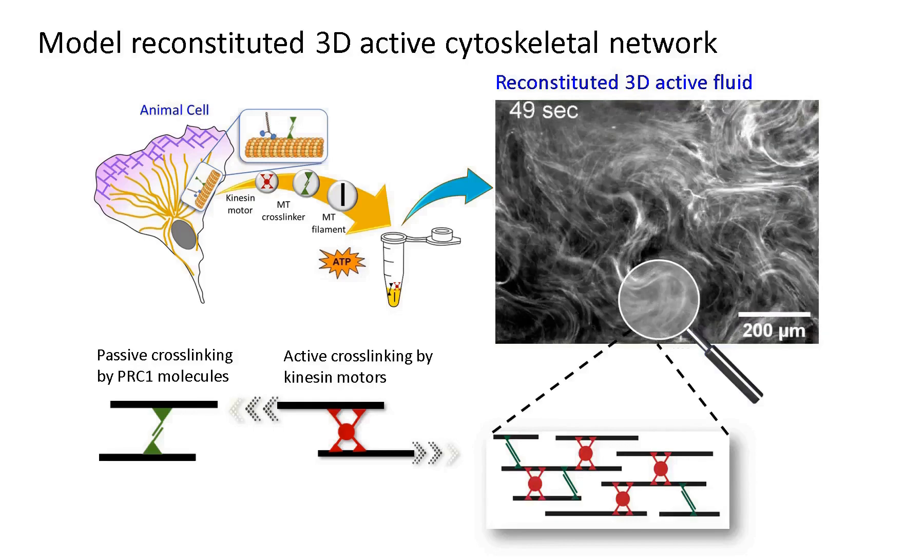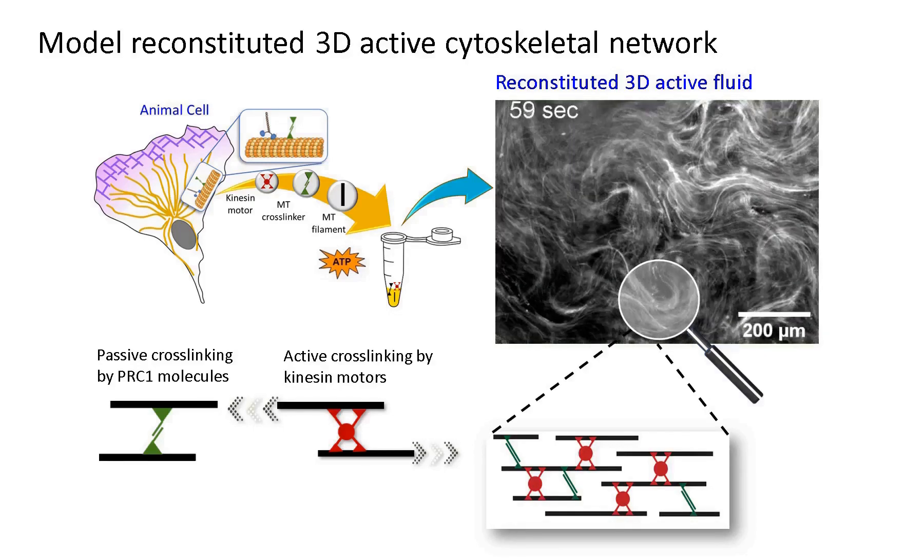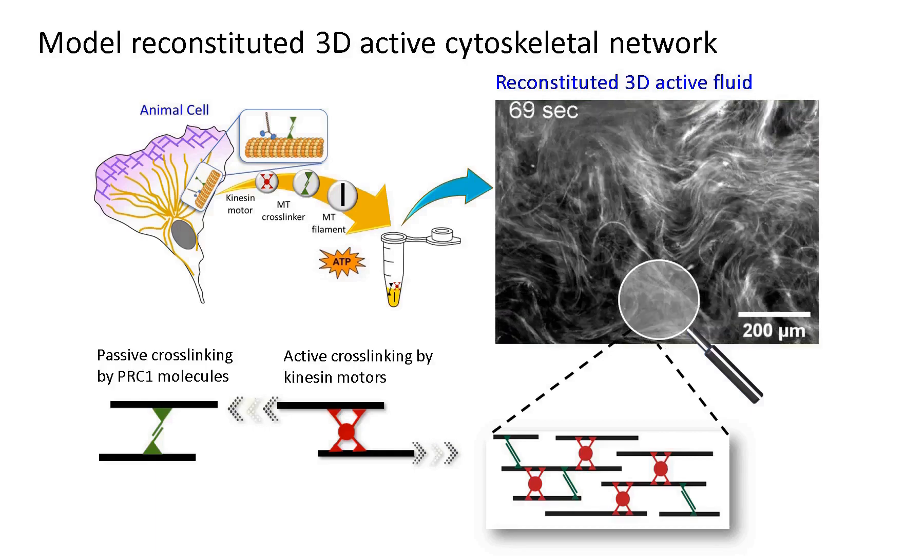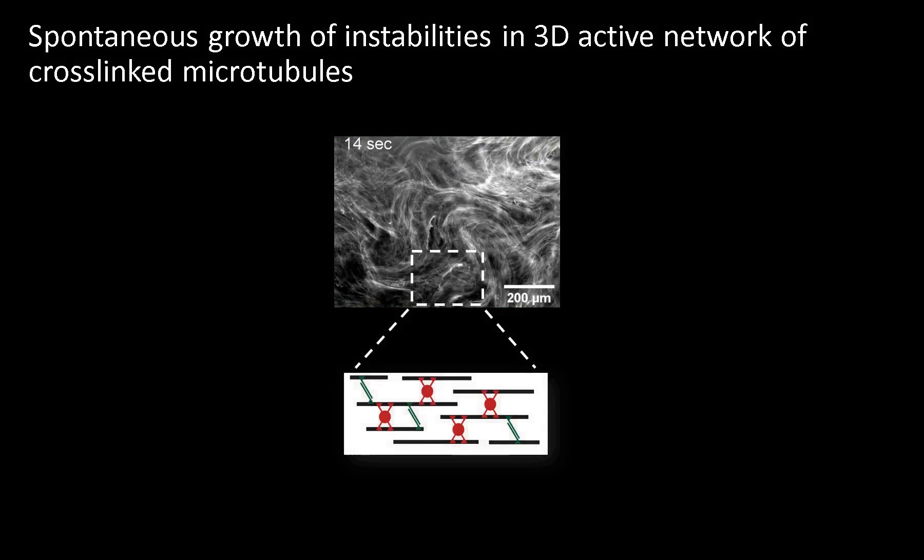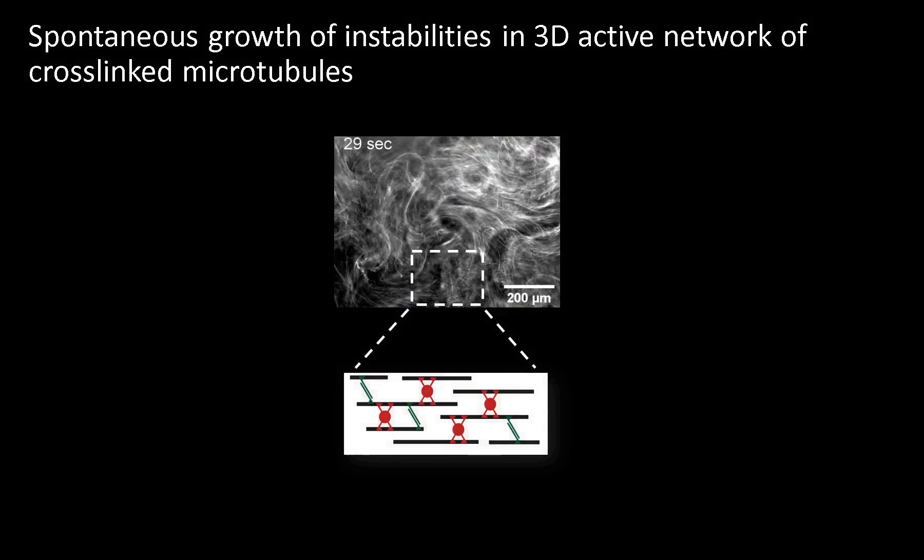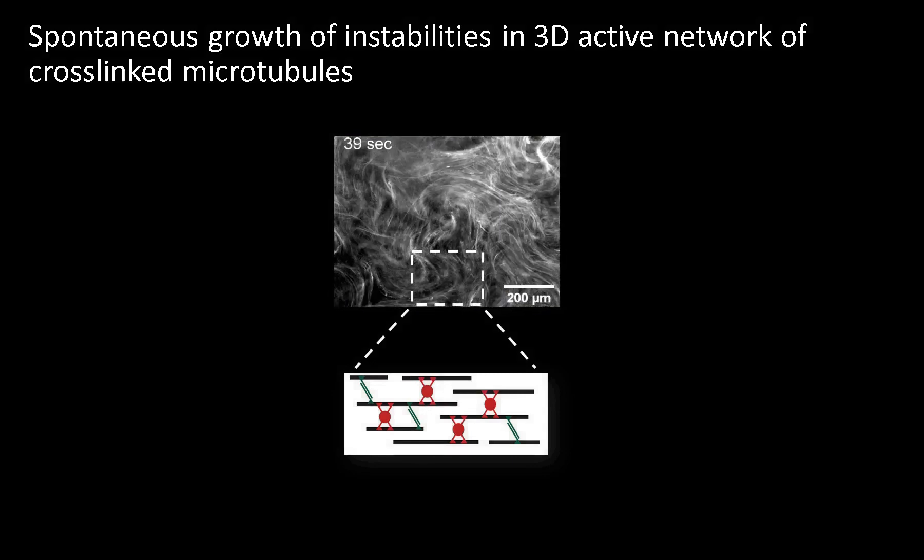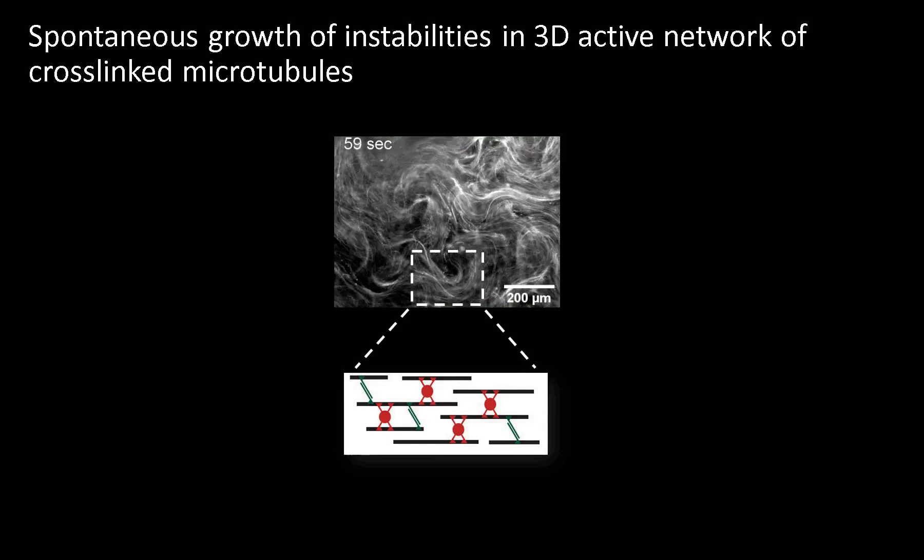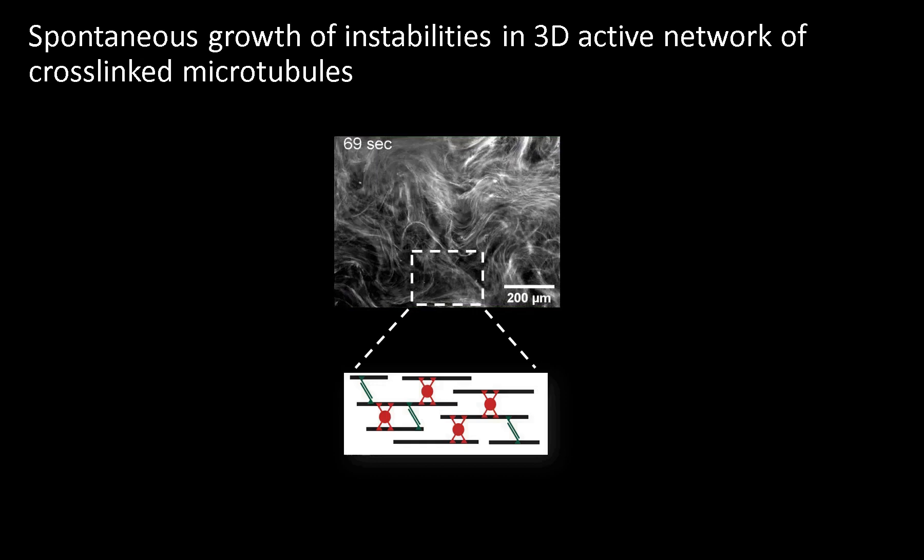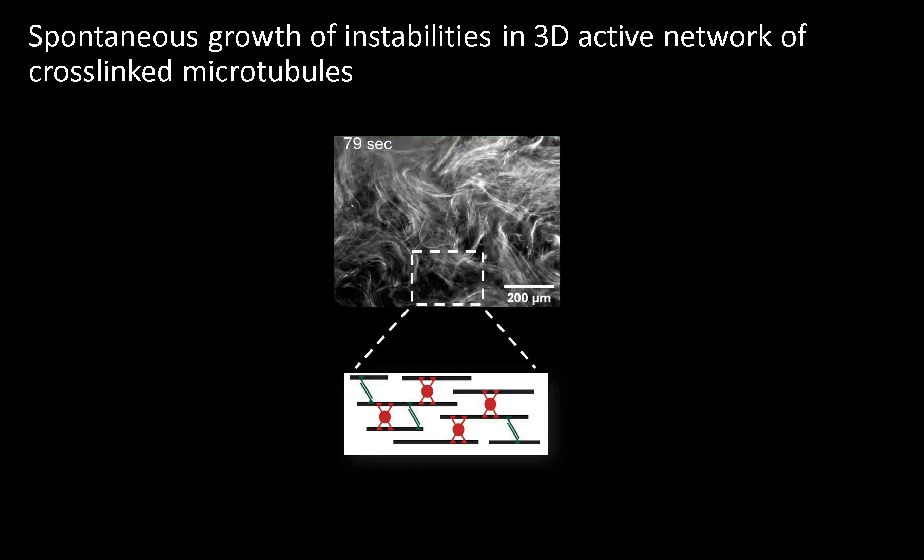Connecting the forces generated at the microscopic scale to the emergent dynamics at larger length scales is a key challenge. Investigating spontaneous deformations in a minimal in vitro system composed of cytoskeletal proteins can reveal how to rationally design and control biomimetic materials. We show that depending on the molecular composition of the network, the extensile nature of kinesin microtubule bundles can drive two distinct instabilities.